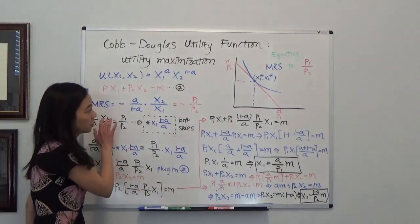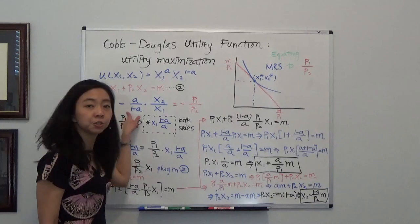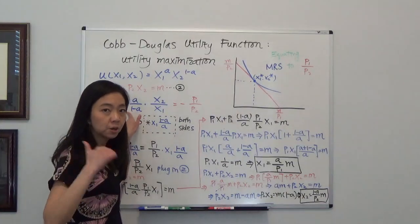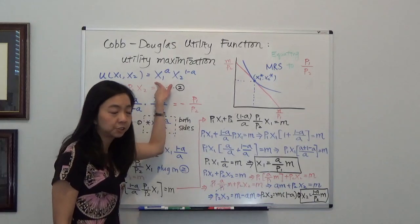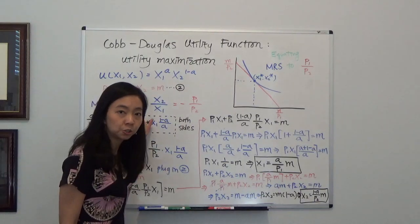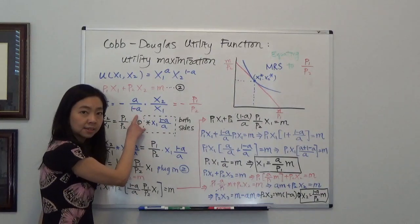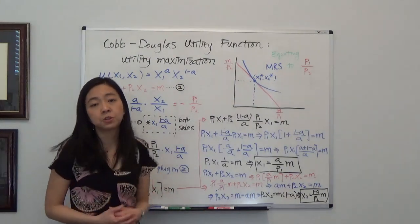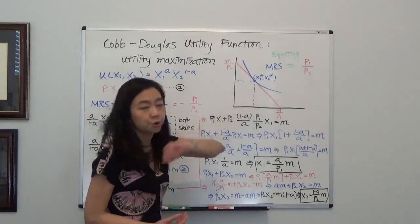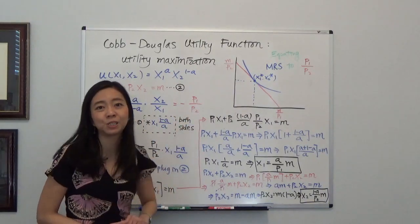So we're going to continue from there. Now our marginal rate of substitution from our previous video, we found out that according to this Cobb-Douglas utility function, our marginal rate of substitution is equal to negative a divided by 1 minus a times x2 over x1. And we also know that the slope of our budget line is equal to negative p1 over p2.